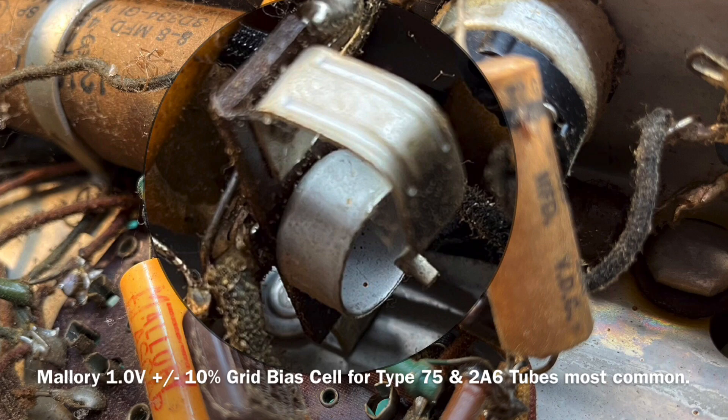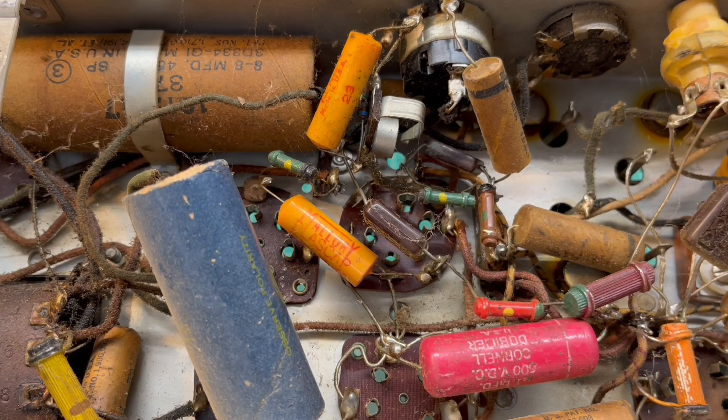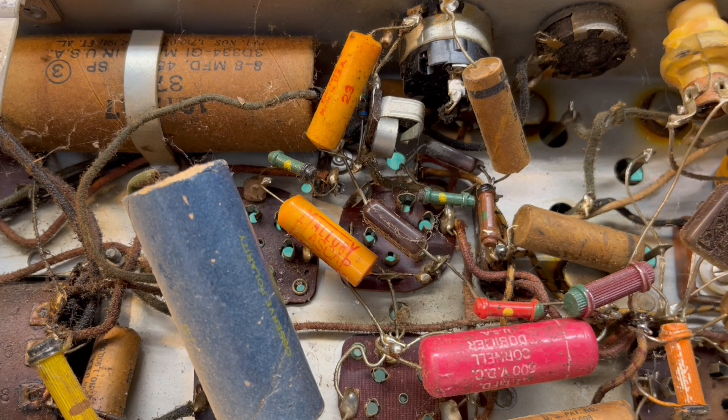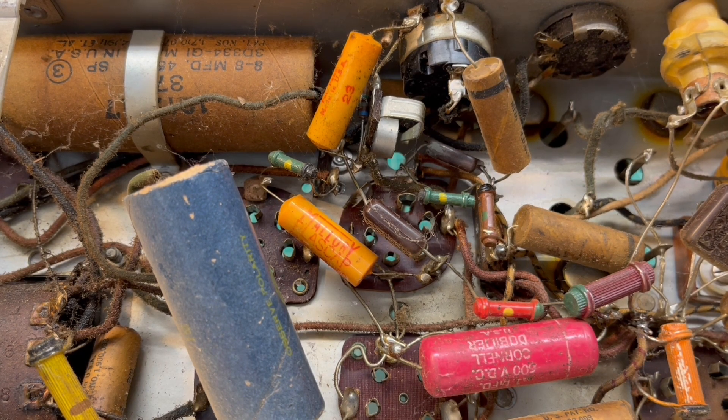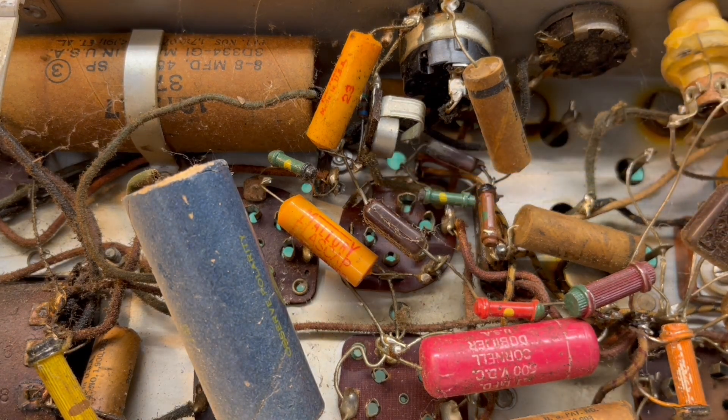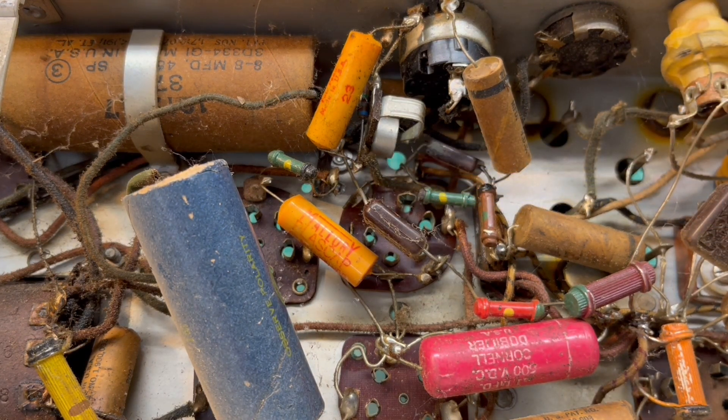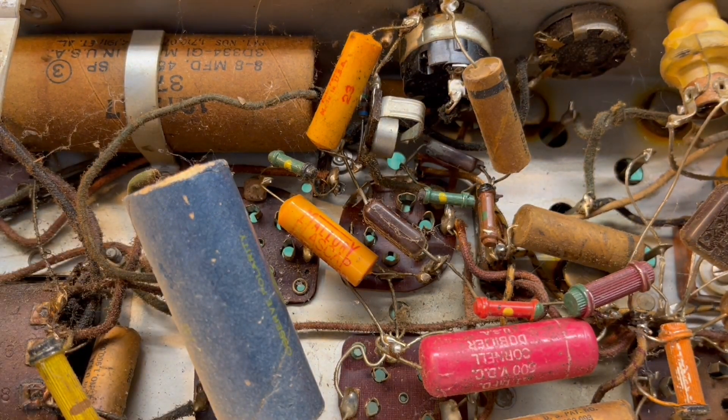You can see it was common back in the early to mid-1930s, and in this case it attaches to a type 75 tube and creates the negative bias for that tube. So we'll have to look at re-engineering that. I've done that in the past - I think we can do that instead of putting a replacement selenium cell in place.